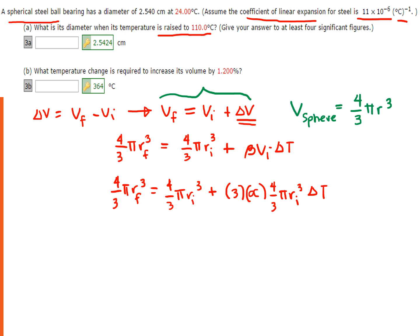Looking at this equation, 4/3 pi is common to all terms, so we can cancel it out. That gives us a much simpler equation: R_f cubed equals R_i cubed plus 3 times the coefficient of linear expansion times R_i cubed multiplied by the change in temperature.